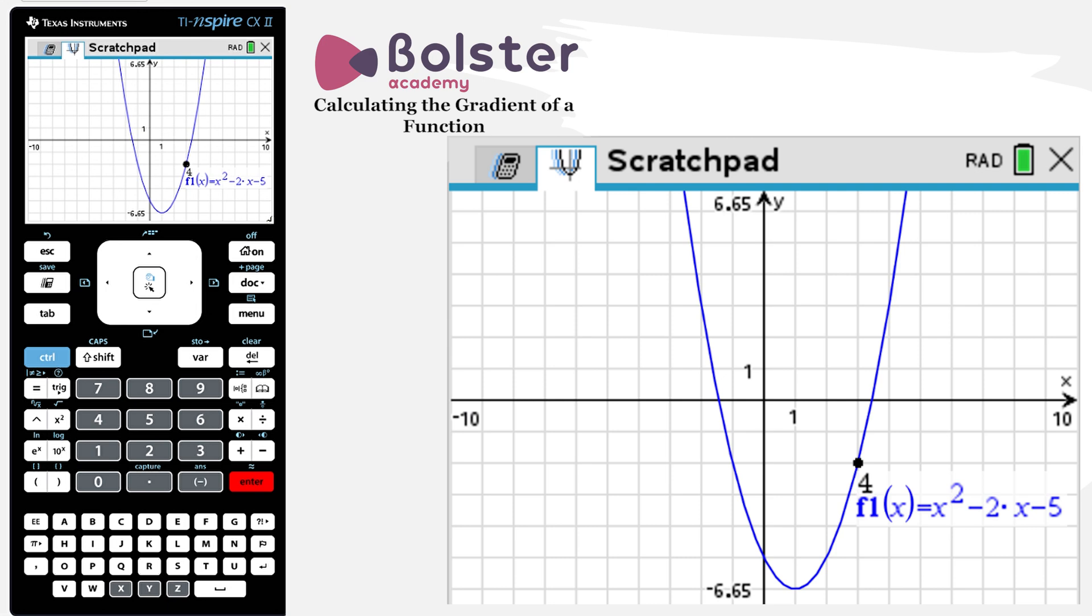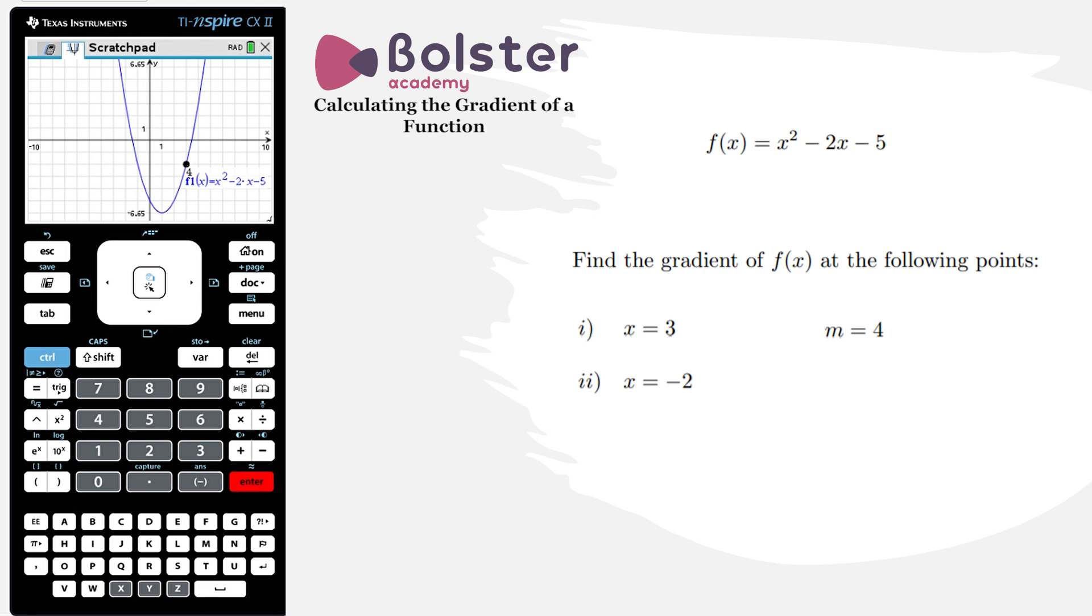So up pops the point where x equals 3 on this curve. And the value that's popped up beside that point, that's the value of the gradient. So the gradient is 4 at the point where x is equal to 3.